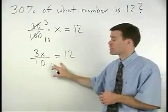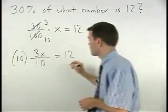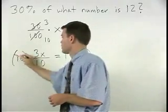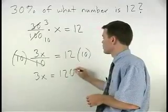To get rid of the fraction, we multiply both sides of the equation by ten. And we have three x equals one twenty.